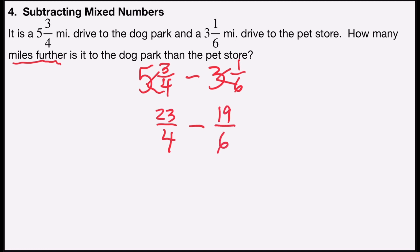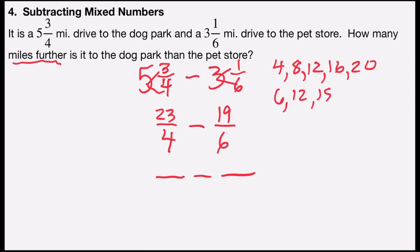Now I'm going to find a common denominator, so I'll list some multiples of four: four, eight, twelve, sixteen, twenty. Then I'll count by sixes: six, twelve, eighteen. I see twelve is in both lists, so twelve will be my common denominator.